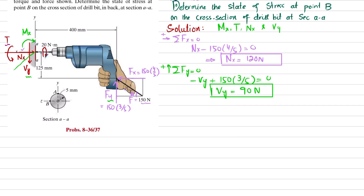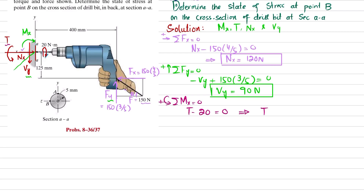Third, we find the torque T about the x-axis. The sum of all moments about the x-axis equals zero, taking counterclockwise as positive. We have a counterclockwise torque T and a clockwise applied torque of 20 N·m, so T − 20 = 0, giving T = 20 newton-meters.